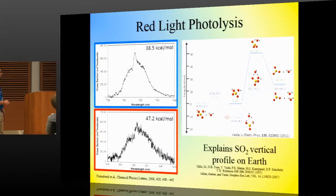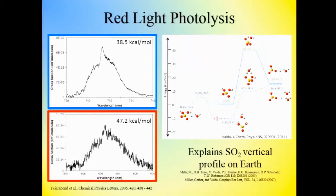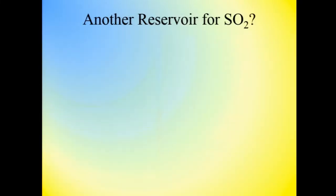And this does a really great job of explaining the SO2 vertical profile on Earth. Unfortunately, it's still not good enough for Venus. So even when this is included in the Venus models, we are still an order of magnitude or two below the SO2 concentrations that are observed. And so our thought was, are there any other reservoirs for SO2? Anything else that could be hiding SO2?